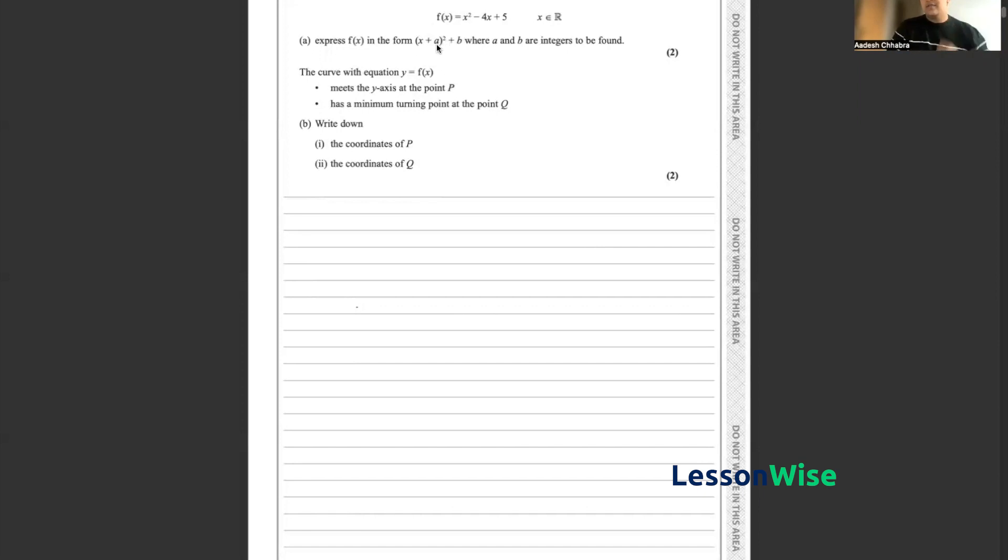I like to tackle this by individually solving for a and b. Now for a, a very simple method for solving the value of a is simply by taking the coefficient of the x term and dividing it by 2.